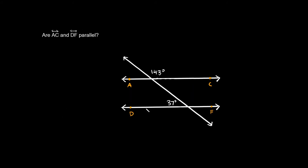Again, we're going to figure out if AC and DF are parallel. It gives us 37 degrees for this angle, so the supplement is 180 minus 37, which equals 143 degrees. Now you can see that we have corresponding angles — this one is in the top right of one cross and this one is in the top right of the other cross. Since we have two corresponding angles that are congruent, AC and DF are definitely parallel.